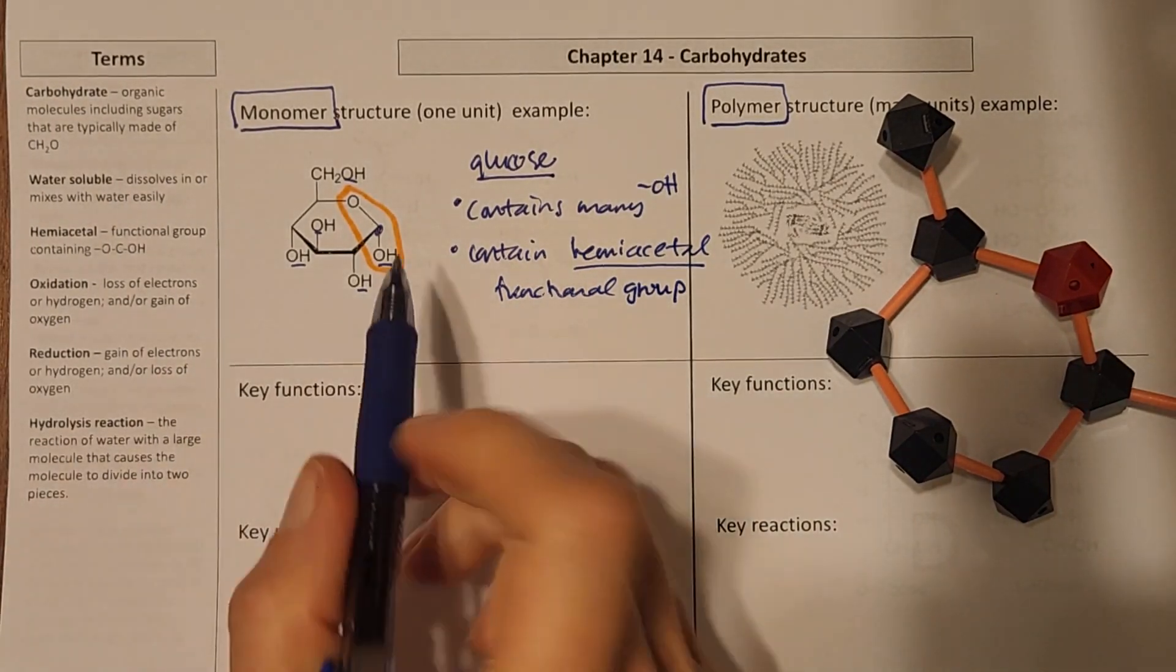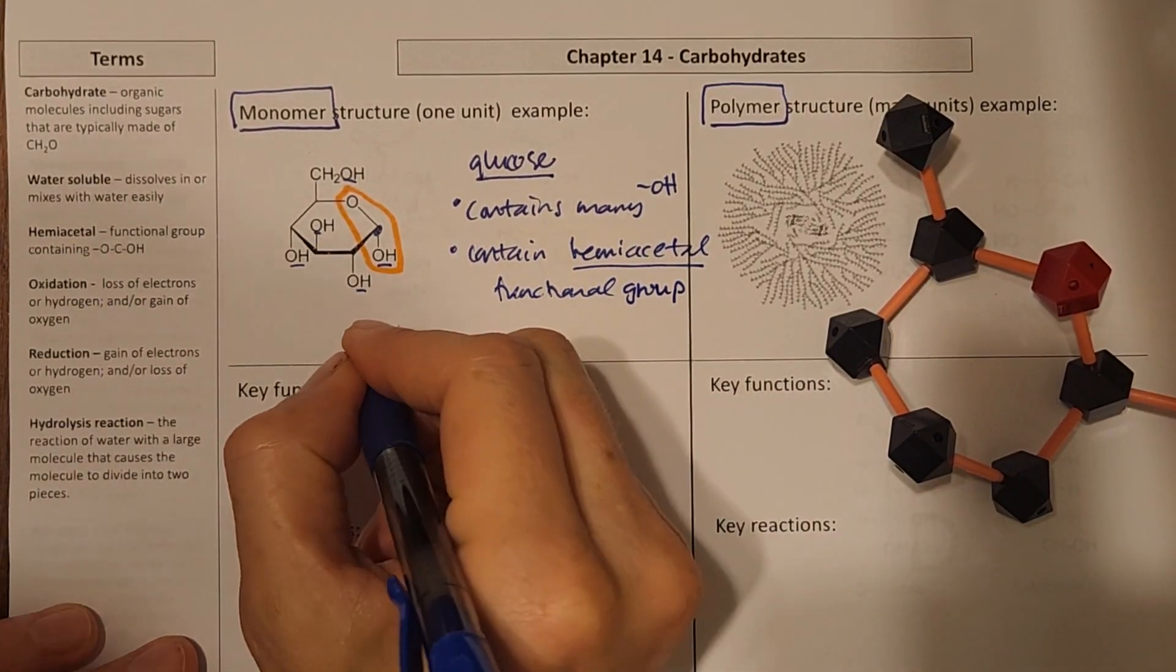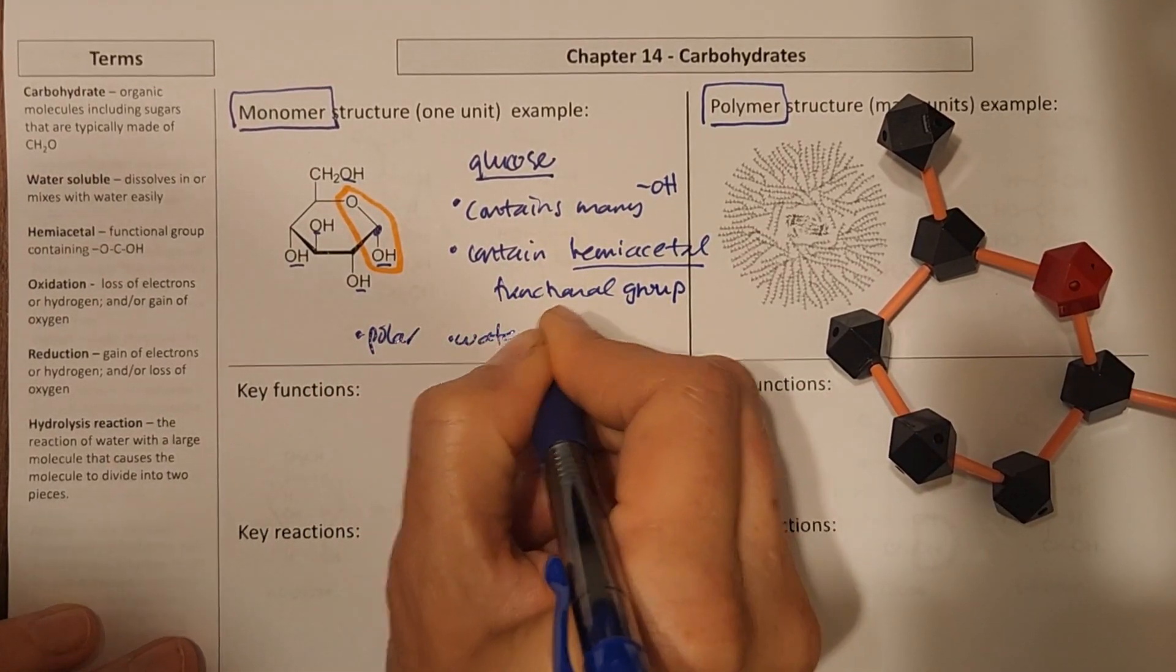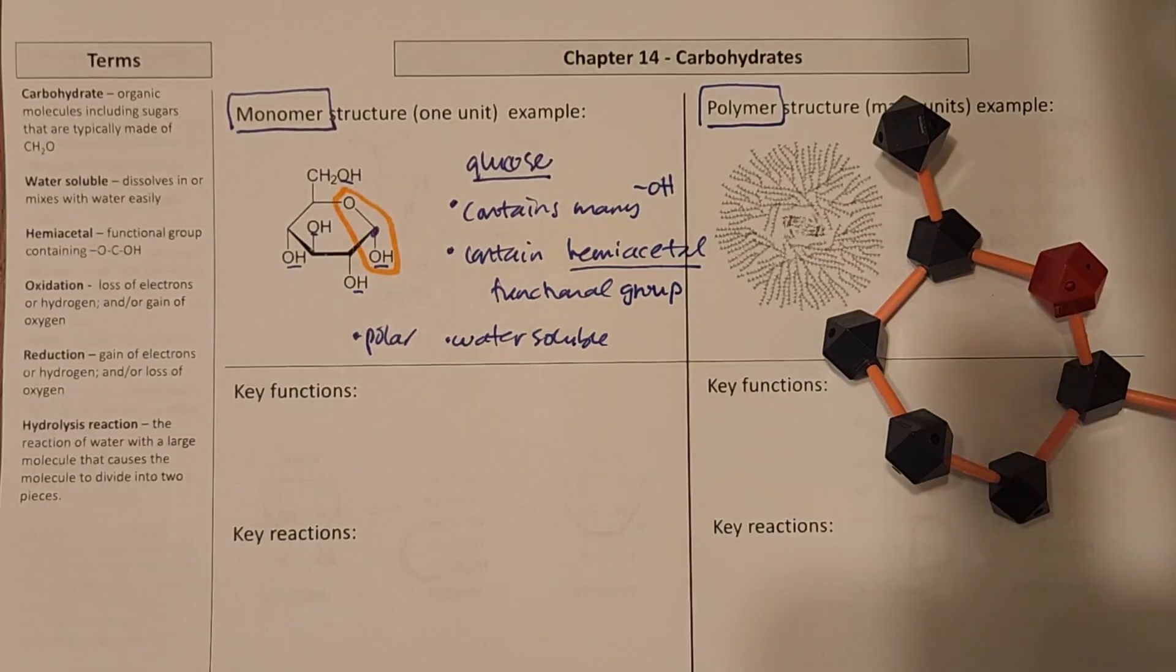Again, like I said, we see all those OHs, which mean that this monomer and others are polar and also water-soluble.